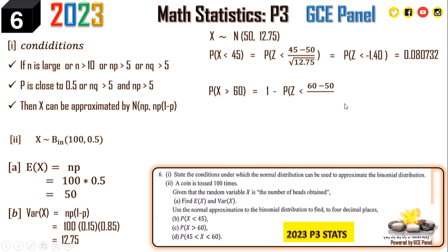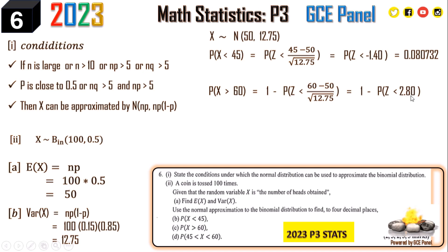For P(X > 60), this equals 1 − P(X < 60). Using the z-score: 1 − P(Z < (60 − 50) / √12.75) = 1 − P(Z < 2.80). From the tables, P(Z < 2.80) = 0.99745, so P(X > 60) = 1 − 0.99745 = 0.0025525, which to four decimal places is 0.0026.